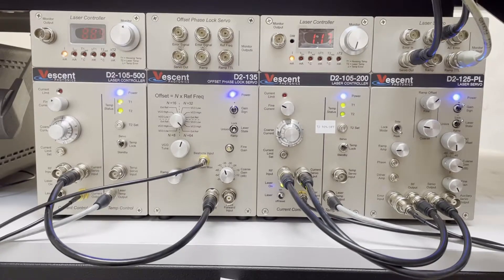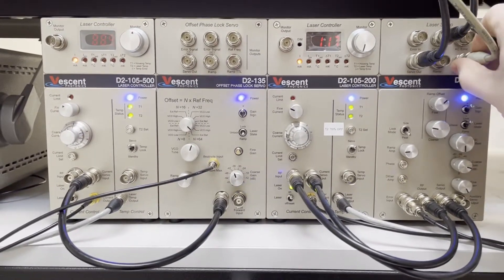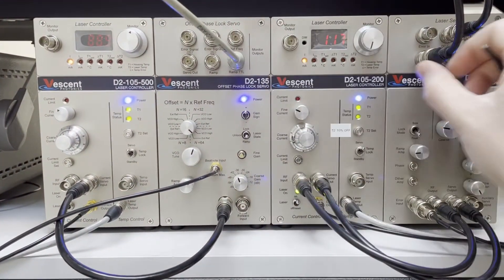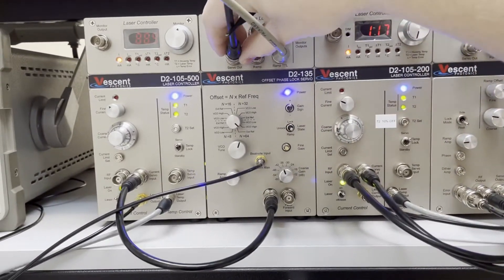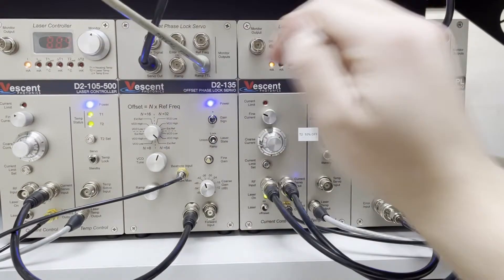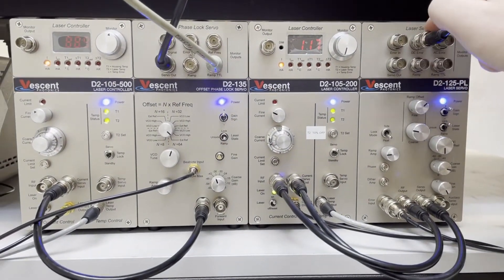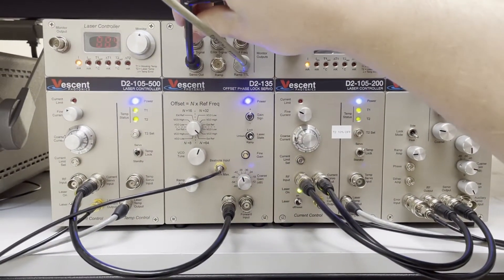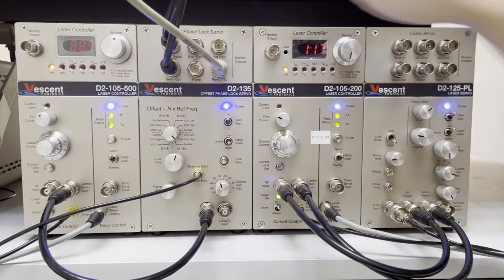Coming back down here, I have a lock now, so I can switch my monitors to the D2-135. An important thing to note about this is that the DC error signal on the D2-125 is this middle BNC, but on the D2-135 it's the far left BNC.